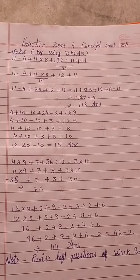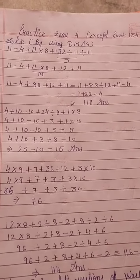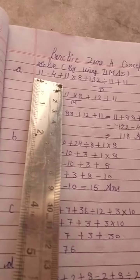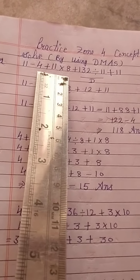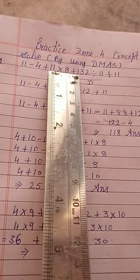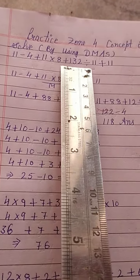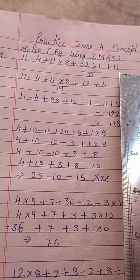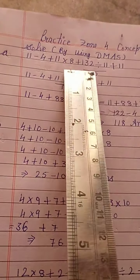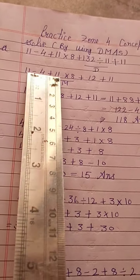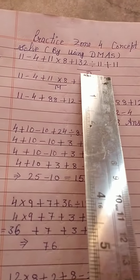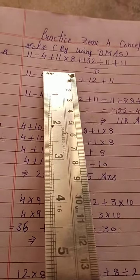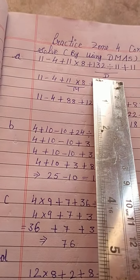We will do these questions by using DMAS. We are having the first question: 11 minus 4 plus 11 multiply by 8 plus 132 divide with 11 plus 11. So, firstly we will solve D — D means division.